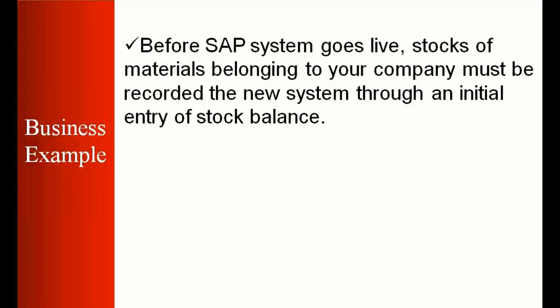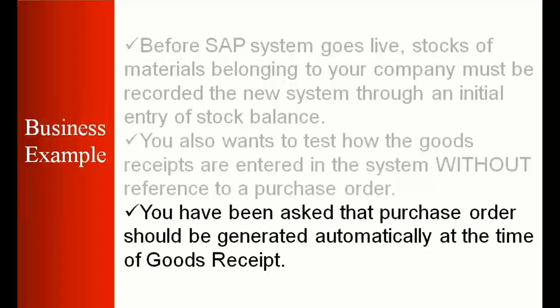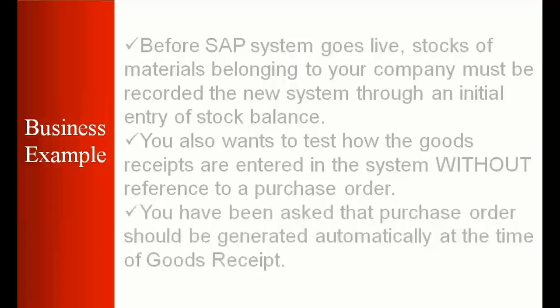We'll also cover how goods receipts are entered in the system without reference to a purchase order — if you want to enter a good receipt and there's no purchase order, how do you do that? Third, we'll look at how a purchase order can be generated automatically at the time of goods receipt. For example, if you're doing a goods receipt and for some reason there is no purchase order, we want the system to create an automatic purchase order. We'll cover the customizing required for that in today's class.